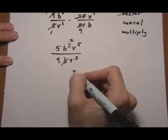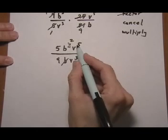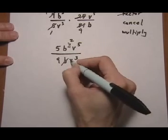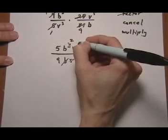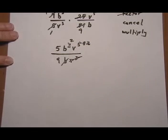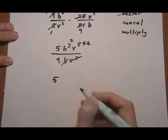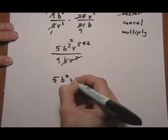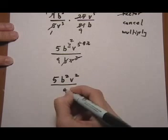On the bottom we have 3 v's and then 5 v's on top, so let's cancel out 3 from the bottom, and if we cancel 3 from the top that leaves us with 2 left over. So our final answer will be 5 b squared v squared all over 9.